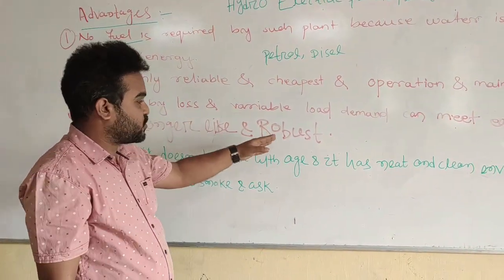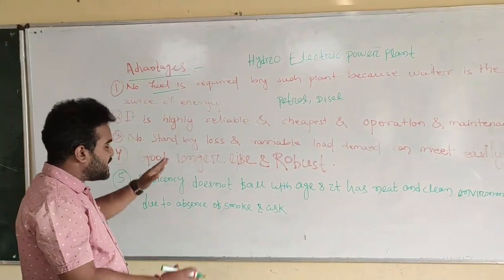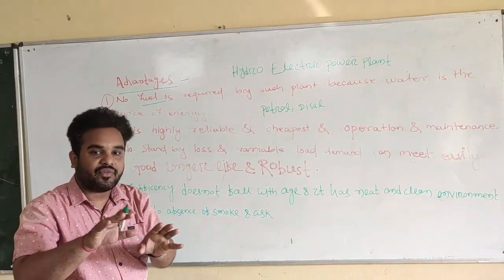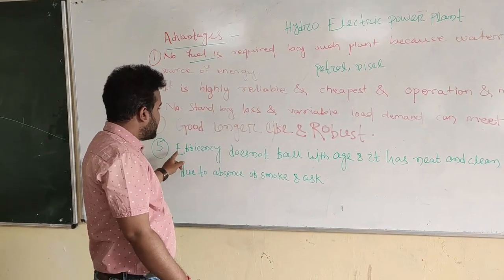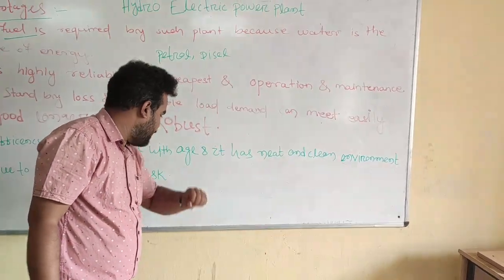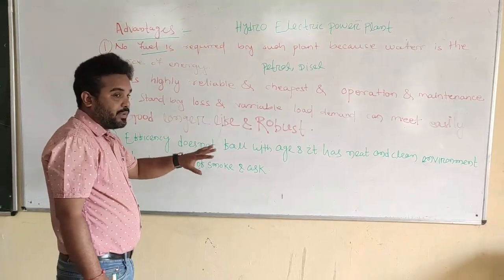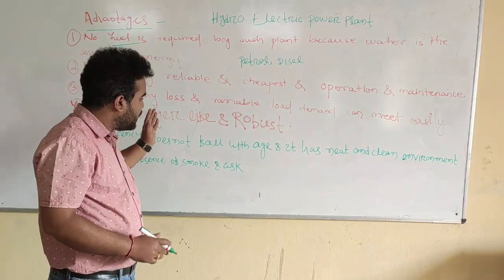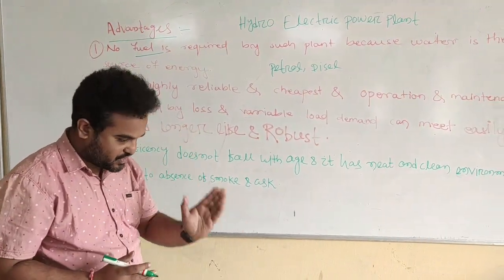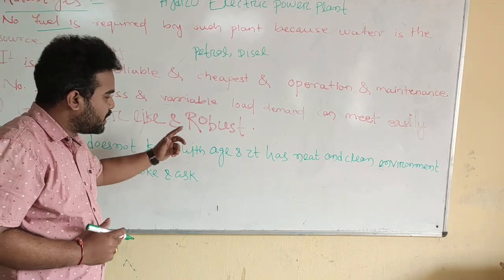Fourth point: good longer life and robust. Whenever we use a hydroelectric power plant, its life is longer — more years. Efficiency does not fall. It has a neat and clean environment due to the absence of smoke. It will run for many more years, but the efficiency will be continued at the same level as when it first started.